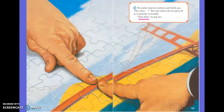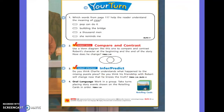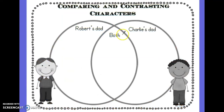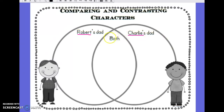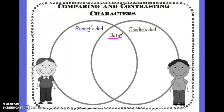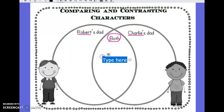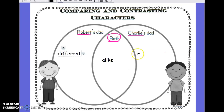Now I have a Venn diagram for you and I want you to think about the two characters from the story: Robert's dad, who is the skywalker, and Charlie's dad, who is the painter. Write down some thoughts and ideas you have about the two characters. How the two characters are alike goes in the middle. On the outsides of the circle, list ways that Robert's dad and Charlie's dad were different. Fill in your thoughts and we will go over this together shortly.